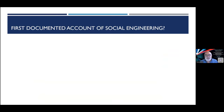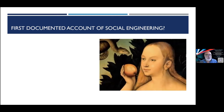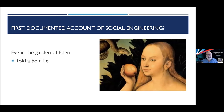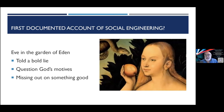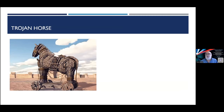The first documented account of social engineering is actually Adam and Eve in the Garden of Eden — right at the beginning of Genesis — where Eve is tempted by the snake to eat an apple she's been told not to eat. The snake starts by telling a lie, then questions God's motives, then says she's missing out on something really good.